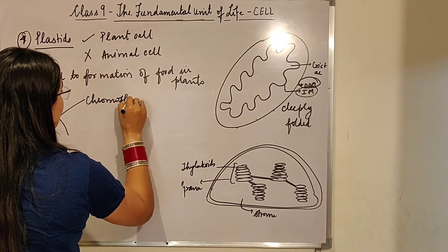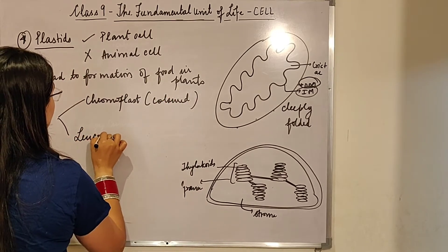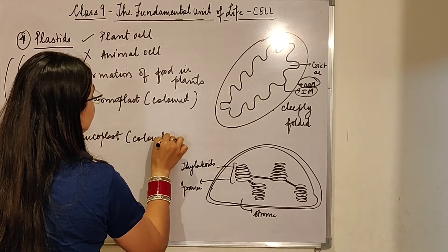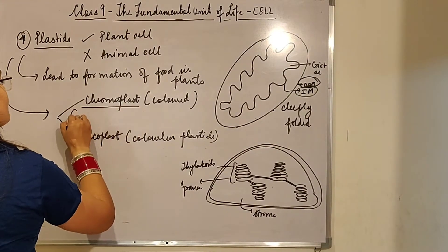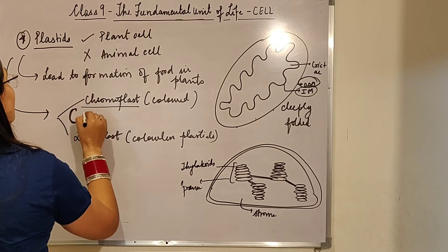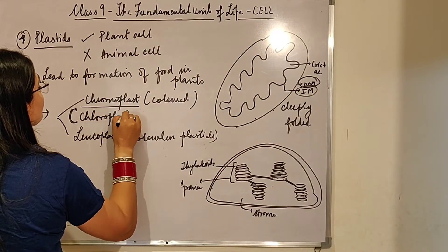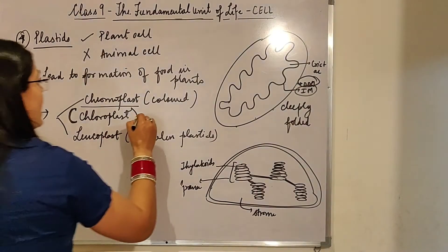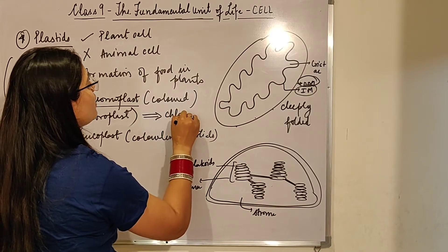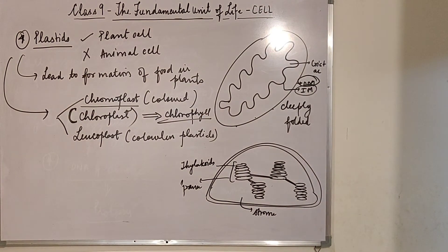Plastids are of two types: chromoplasts, which are the colored plastids, and leucoplasts, which are the colorless plastids. Chromoplasts have a special pigment. Chloroplast is a special plastid which has a green colored pigment called chlorophyll. Chlorophyll helps in the process of formation of food in green plants in the presence of sunlight, water, and CO₂.